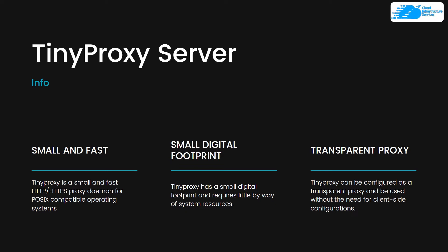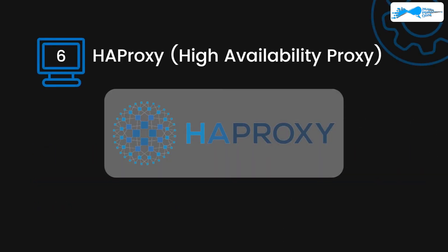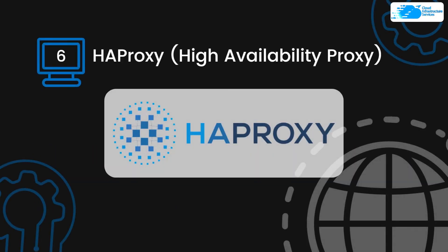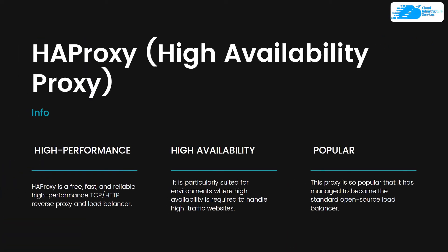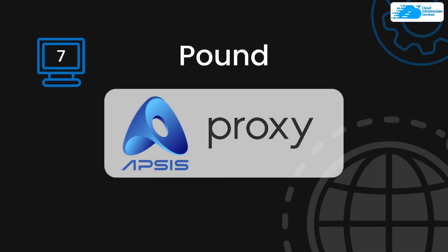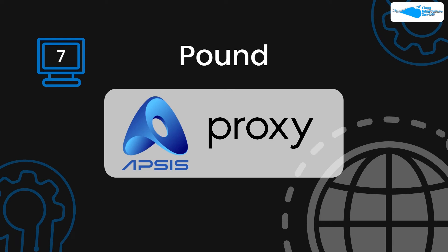At number six we have HAProxy, short for High Availability Proxy. HAProxy is free, fast, and offers reliable performance over TCP and HTTP as a reverse proxy. Its distinct feature is its popularity — it has managed to become the standard open source load balancer.